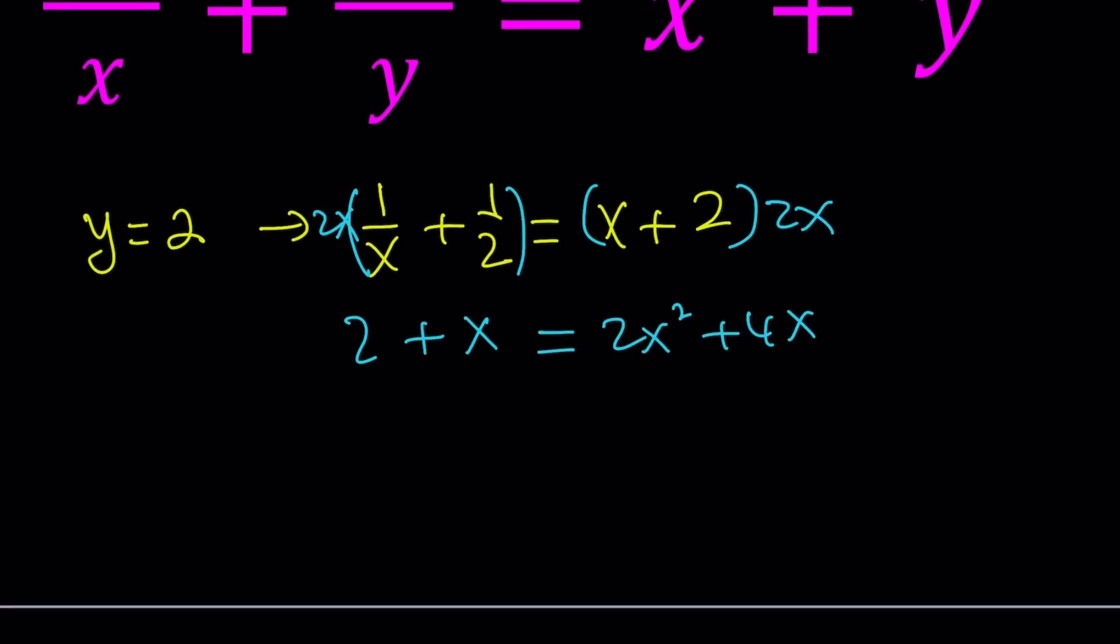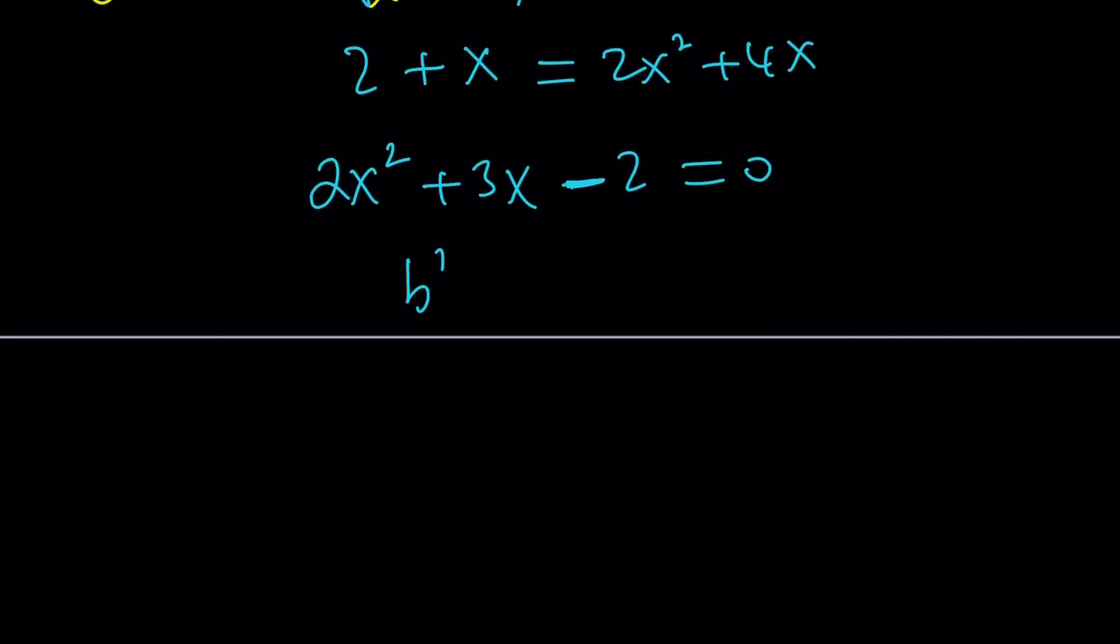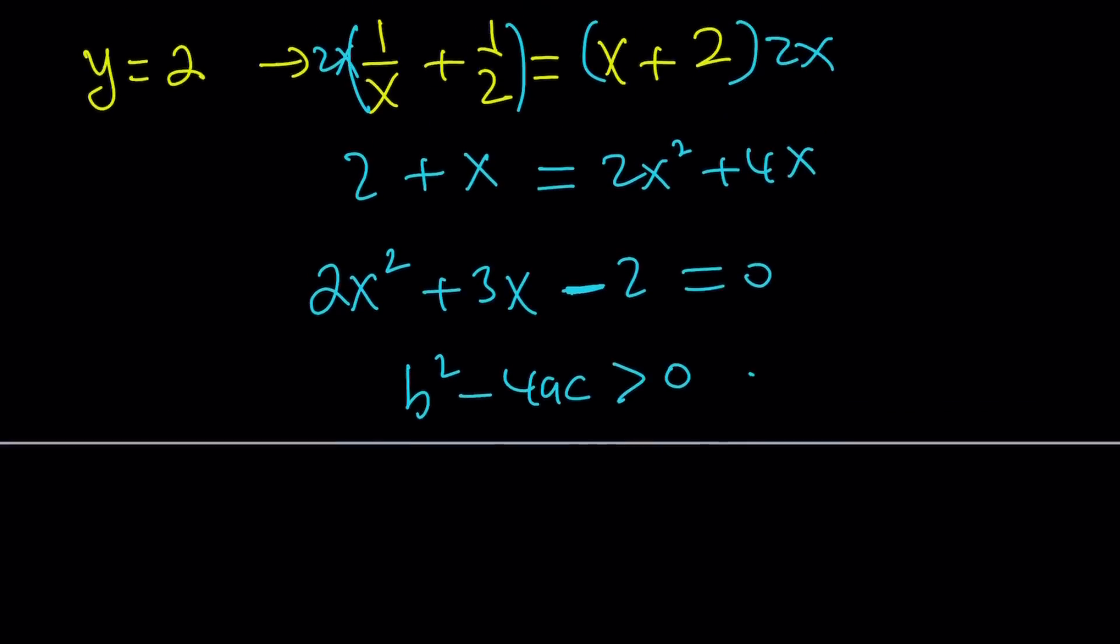If we put everything on the same side, 2x² + 3x - 2 = 0. One thing you should always know is if the coefficients of a and c are opposite sign, there's always real solutions because the discriminant is going to be positive. Remember, the discriminant is b² - 4ac. This guarantees b² - 4ac > 0, so we're going to find real solutions.